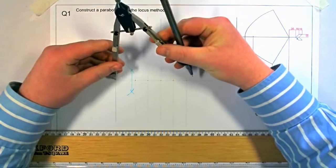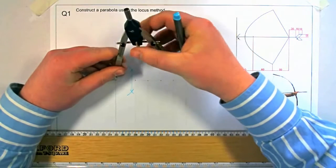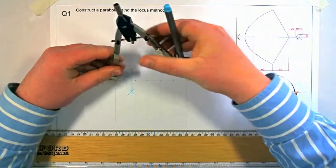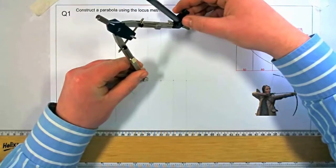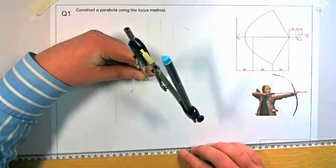Then with the compass measure from the directrix to each one of these division lines. And swing this from the focal point onto the relevant division line.